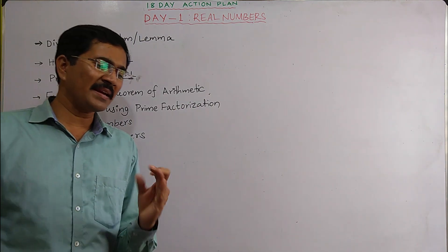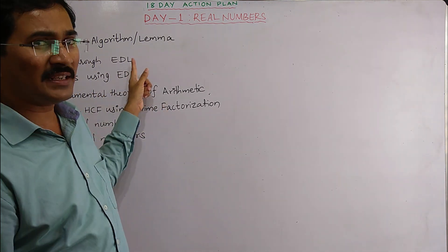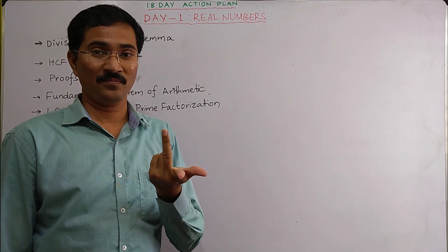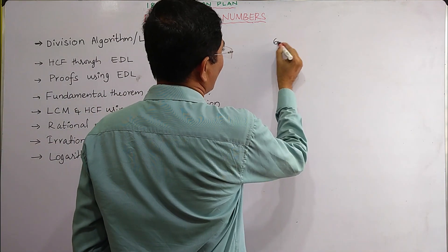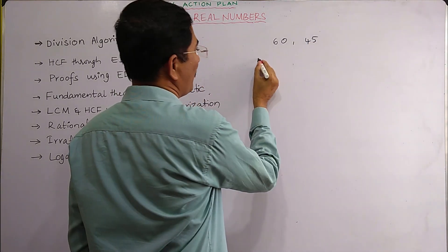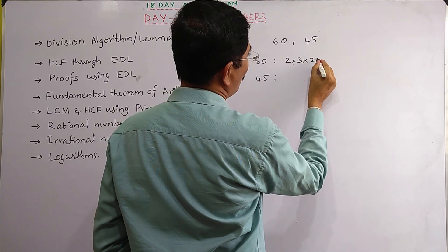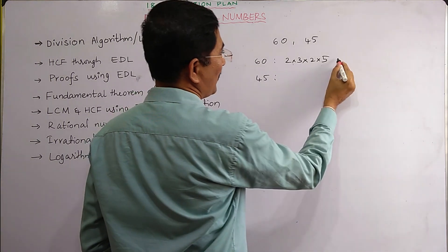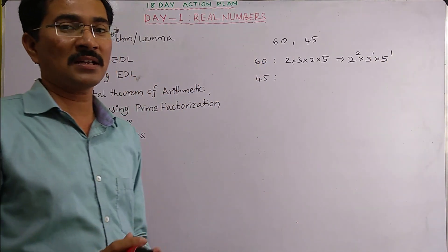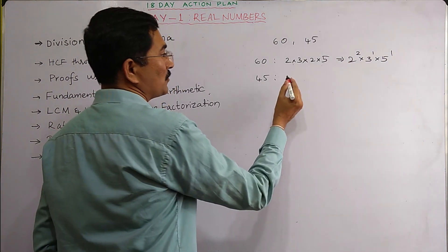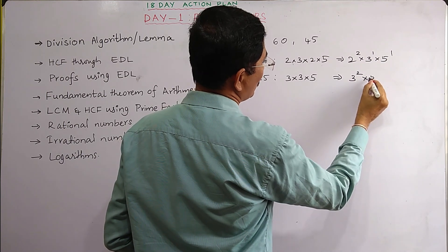Now, finding LCM and HCF using prime factorization. LCM and HCF can be found in three ways; here we use prime factorization. For example, find LCM and HCF of 60 and 45. Prime factorize both: 60 = 2² × 3 × 5, and 45 = 3² × 5.